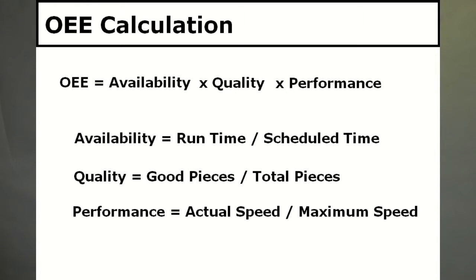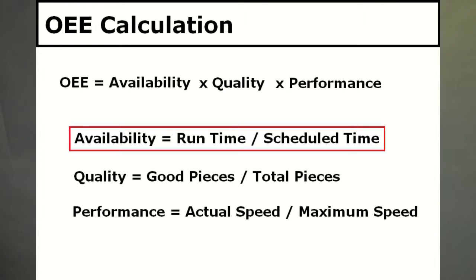OEE is made up of three components. First, availability, which is the percentage of planned time that a machine is running. Planned time does not include planned downtime, such as breaks and meetings. Within the Production ACE system, it is a simple configuration setting to include or exclude specific downtimes from availability and OEE. For old school manufacturers, availability is analogous to utilization.